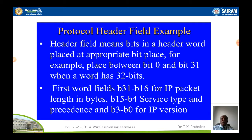A header field is a bit in a header word placed at an appropriate bit position. Normally a header word has 32 bits. The first word field is from B16 to B31 for any IP packet, which denotes the length of the packet — that is, the amount of data being transmitted in bytes. B14 and B15 is the service type, which involves assigning priority and whether the data can be fragmented. B0 to B3 indicates the IP version. We are using IPv4 and IPv6 — coded as 0100 for IPv4 and 0110 for IPv6.